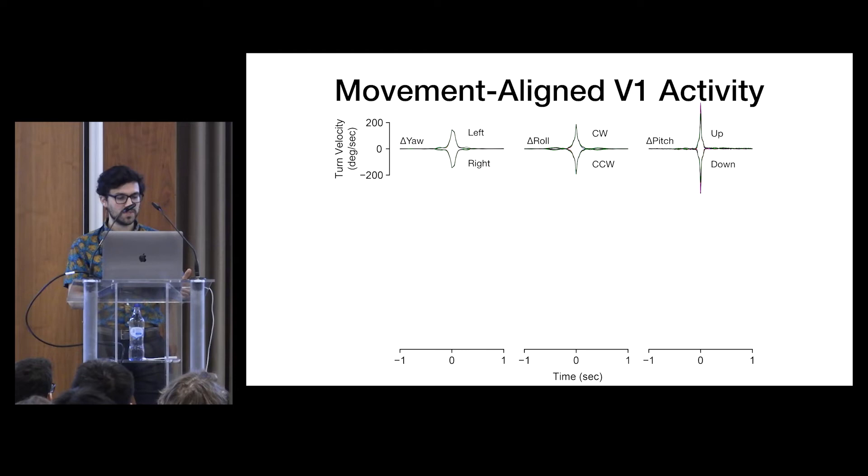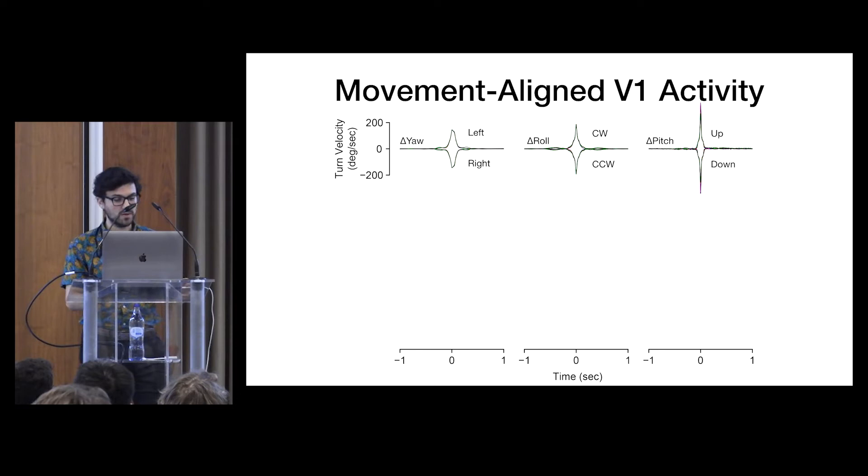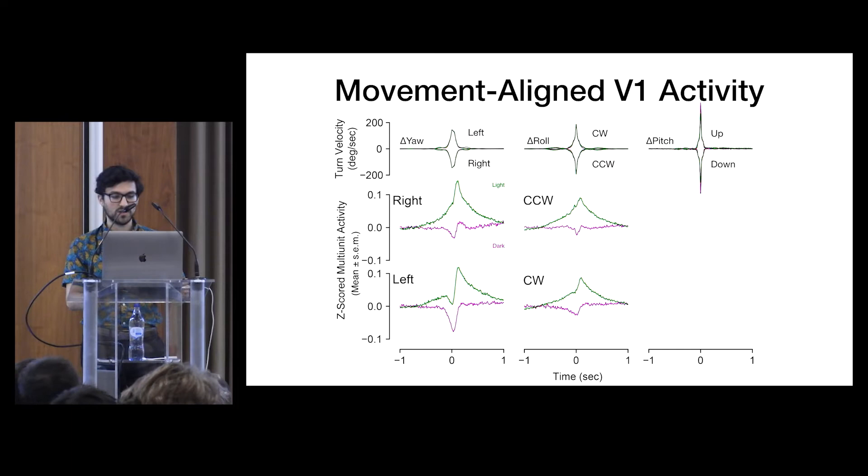So when we do this, for all of the turns we can overlay them, and here we have velocity at the top with left and right turns in the left, clockwise and counterclockwise in the middle, and up and down nods on the right. On the bottom two panels is the z-scored multi-unit firing rates extracted from 84 two-hour sessions in five rats and averaged across all turns and all tetrodes. And throughout this talk, purple traces are going to indicate sessions in the dark, and green ones are going to indicate sessions in the light. And again, we can do this not just for right and left turns, but also clockwise and counterclockwise tilts and up and down nods.